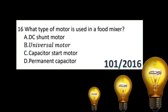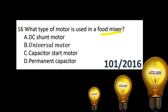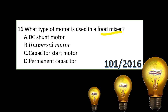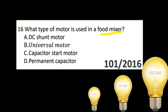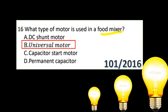What type of motor is used in a food mixer? Options are: DC shunt, universal motor, capacitor start, permanent capacitor. The answer is: universal motor.